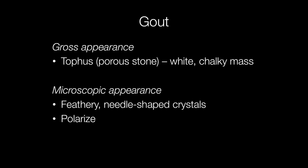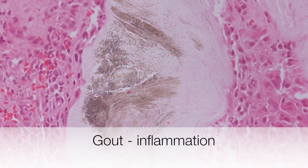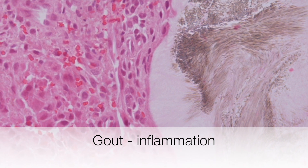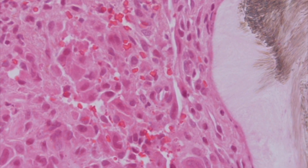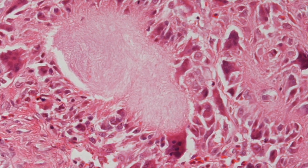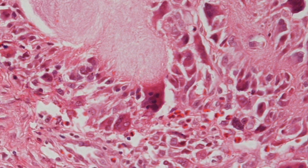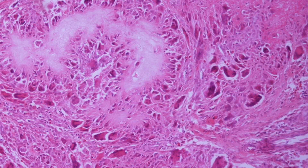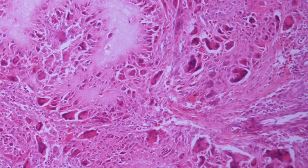Although gout is a really horrible debilitating condition for patients, it is rather a beautiful condition when looked at down the microscope, where you can see the feathery needle-shaped crystals that polarise brightly. Here is a nice example: the centre of the picture shows the sodium urate crystals, surrounded by inflammatory cells including polymorphs and macrophages. Another characteristic feature is the presence of multinucleate foreign body type giant cells responding to the sodium urate crystals, with surrounding fibrosis.